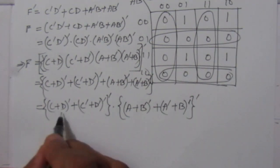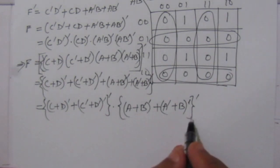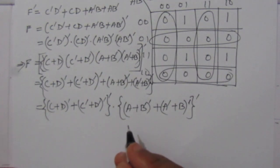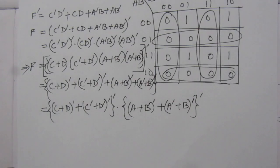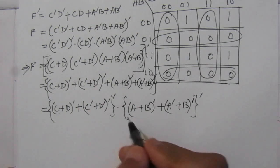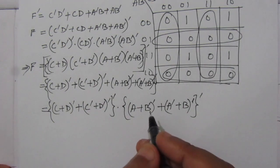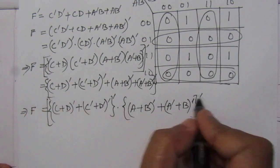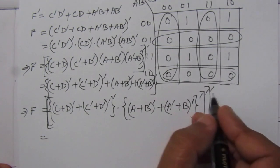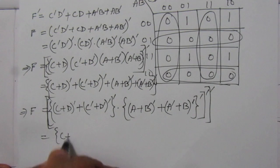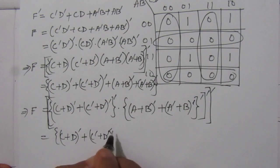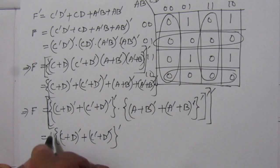We can see that two-input NOR gates implement the inner terms. However, the AND operation between the two groups cannot be implemented directly with NOR gates. So we apply another double complementation to convert the AND into a NOR-compatible operation, ensuring the entire function uses only NOR operations.